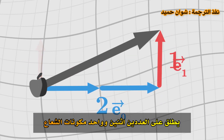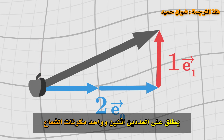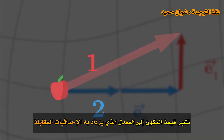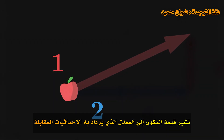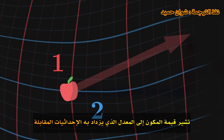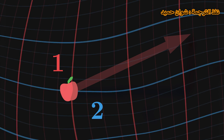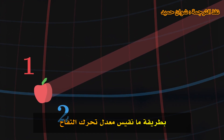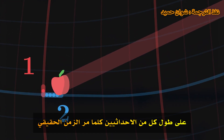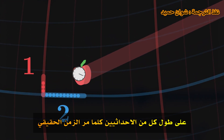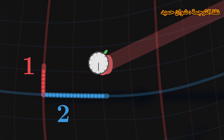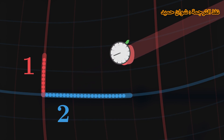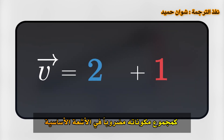The numbers 2 and 1 are called the components of the vector. The value of a component indicates the rate at which the corresponding coordinate increases. In a way, we measure the rate at which the apple moves along each of the two coordinates as proper time goes by. More generally, we can write the velocity vector as the sum of its components multiplied by the basis vectors.